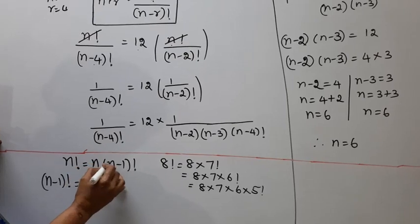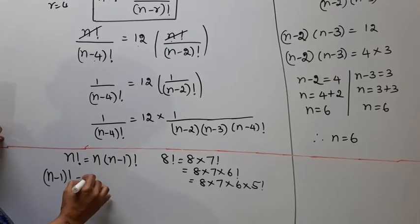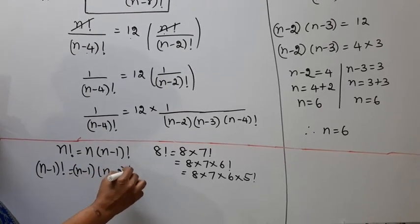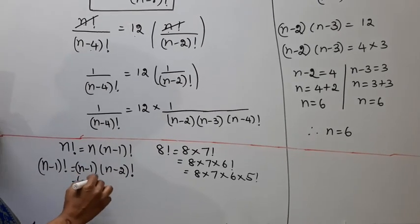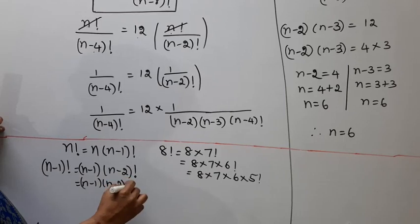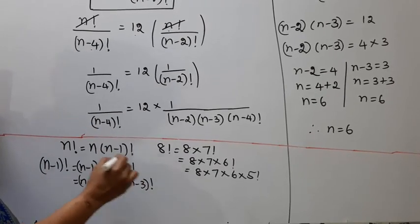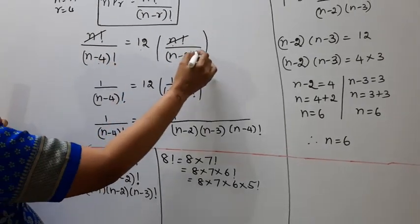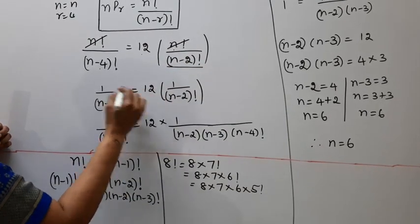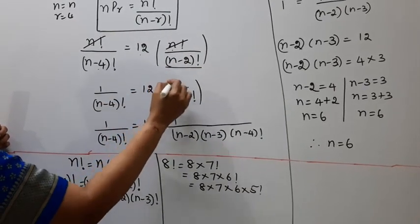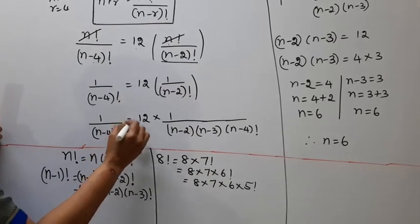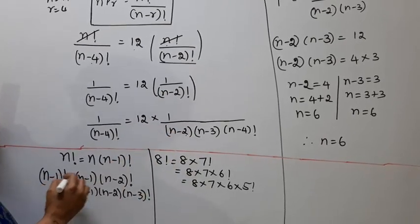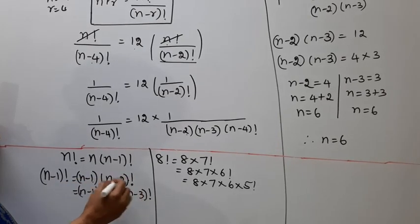After cancellation, we work with n into n minus 1, then n minus 1 into n minus 2 factorial. Expanding further: n minus 1 into n minus 2 factorial, and n minus 1 into n minus 3 factorial terms are simplified step by step.